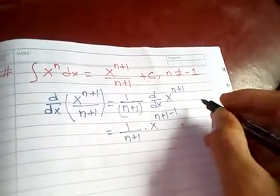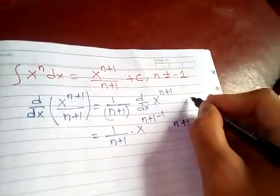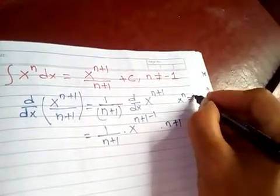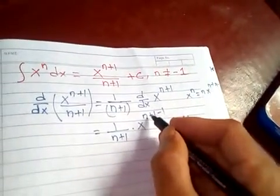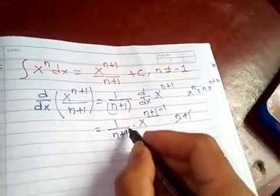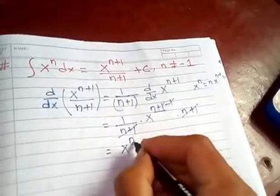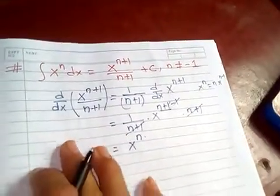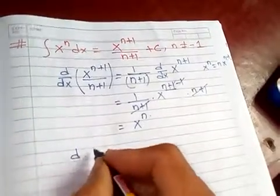This term is n minus one times n plus one. Because the derivative of x to the n is n times x to the n minus one, this whole term becomes n plus one times x to the n. You can solve these two, and lastly you get x to the n only.